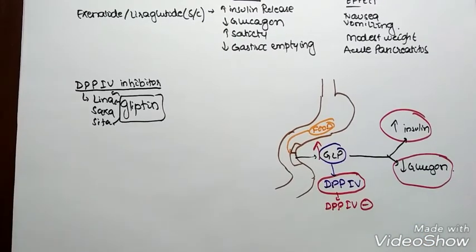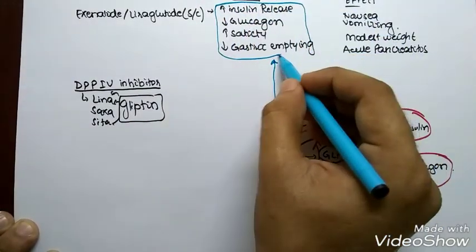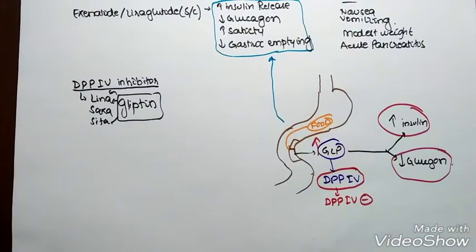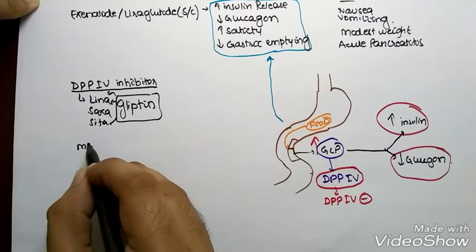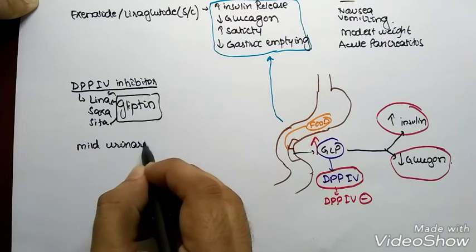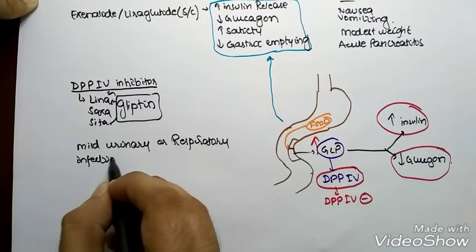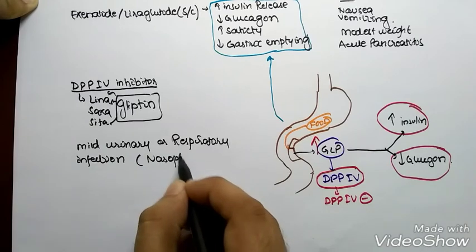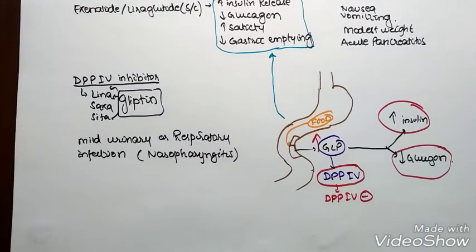I am enhancing the action of GLP. This is the similar mechanism of drugs like lena, sexa, cita, and the glyptins. That's all about DPP4 inhibitors. What are its adverse effects? It causes mild urinary and respiratory tract infections like nasopharyngitis. Our DPP4 drug is completed.